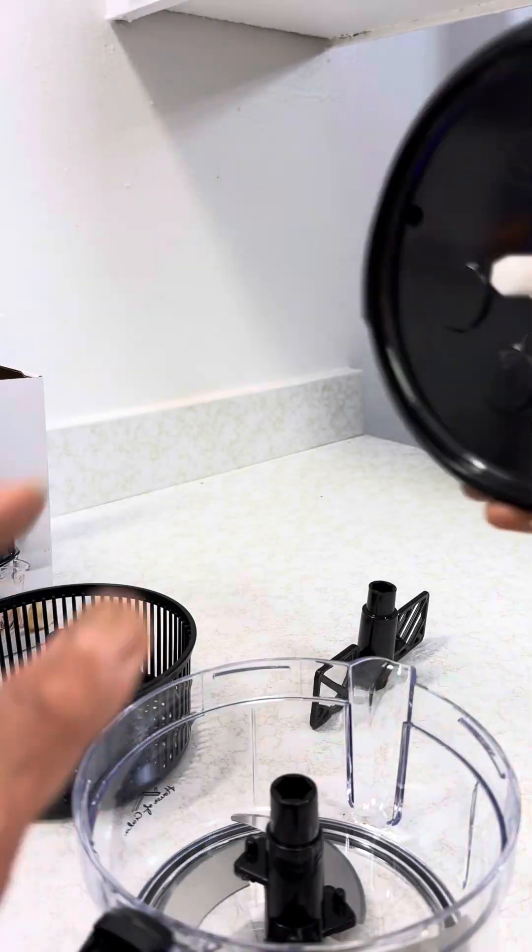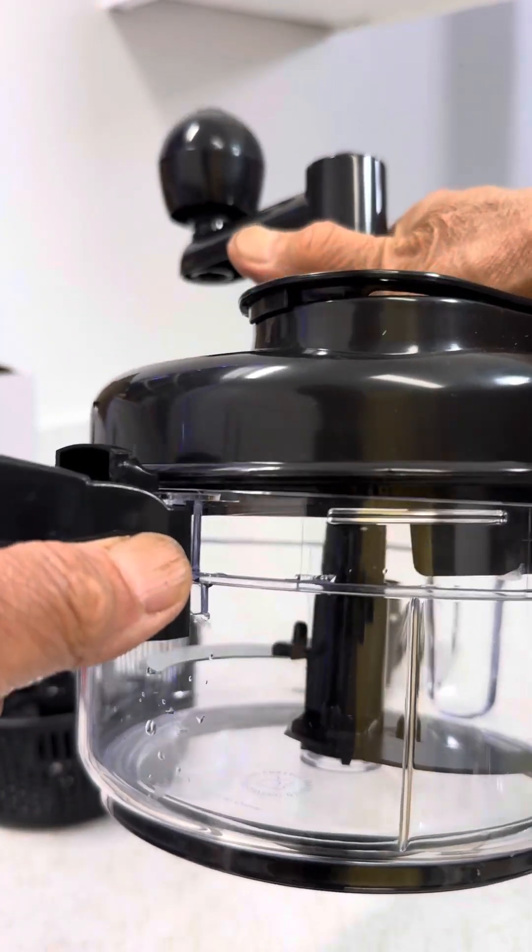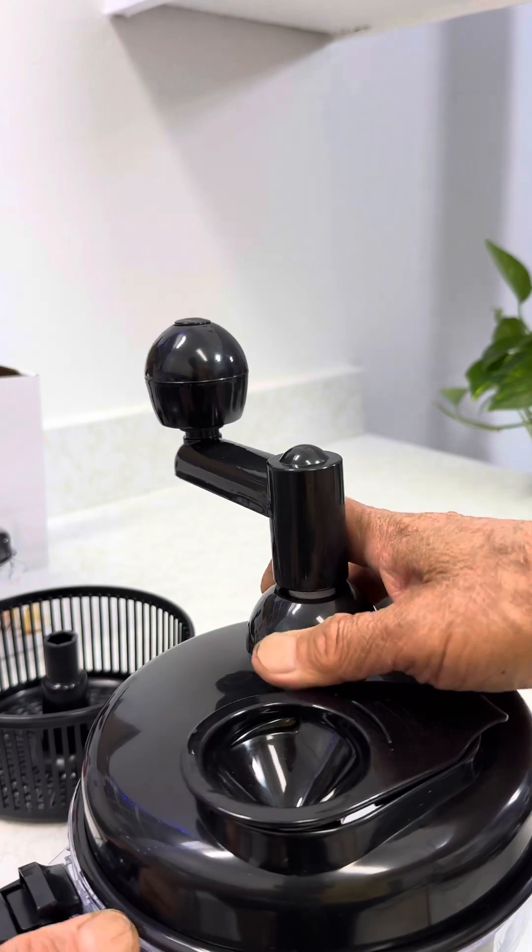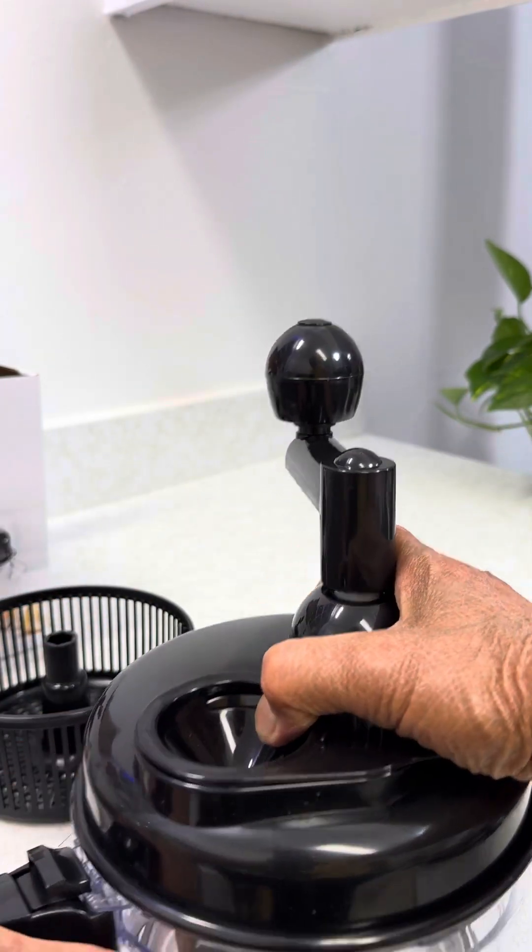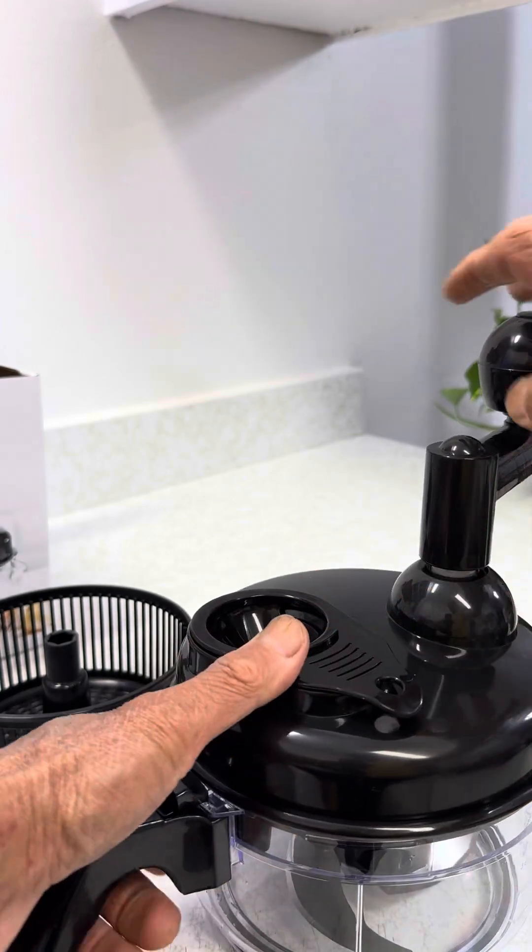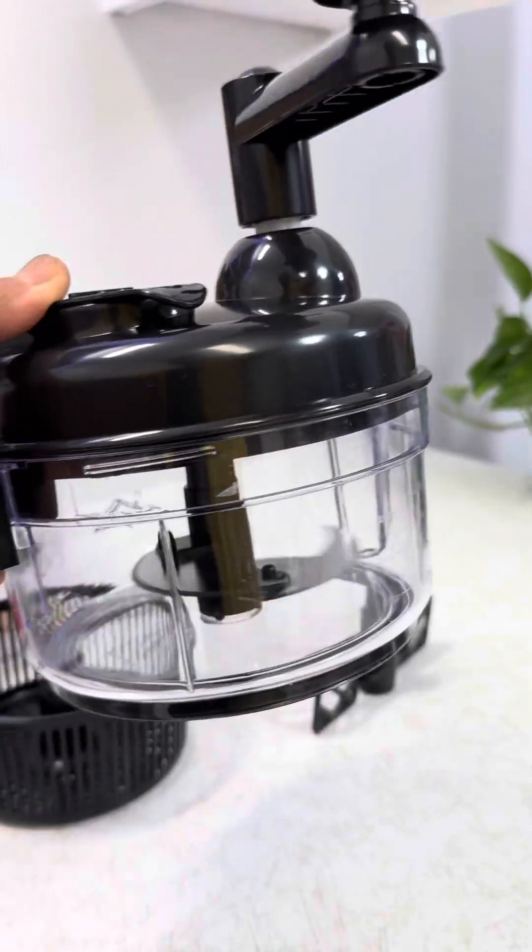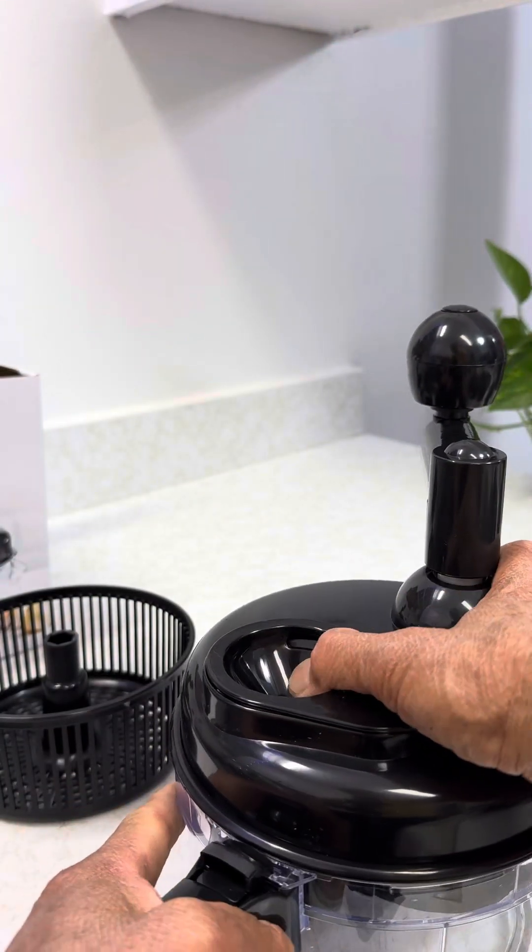Like that. And then line up this thing here in the center of it. Close the lid. Turn it clockwise to close it. And then you turn it to chop. I'm going to put something in here to show you.